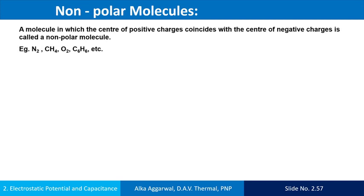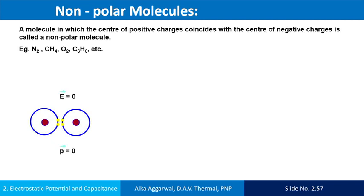Examples of nonpolar molecules are ammonia, methane, oxygen, C6H6, etc. In the absence of the external electric field, the effective positive and negative centers coincide and hence a dipole is not formed.